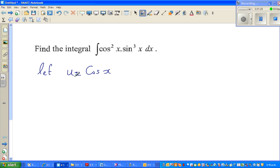So if u equals cos x, this implies u squared equals cos squared x. So whenever you're doing a substitution, you need to change everything in terms of u, even this dx in terms of u.